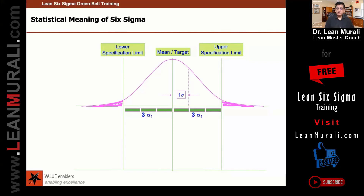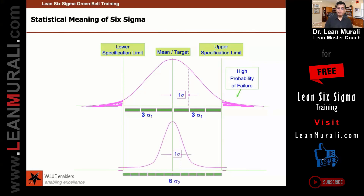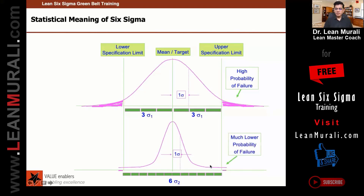If it is plus or minus 3 standard deviations, this is how it would be and it is a high probability of failure. But if 6 standard deviations are inside the specification limits, then the probability of failure is low. So it is plus or minus 6 standard deviations.